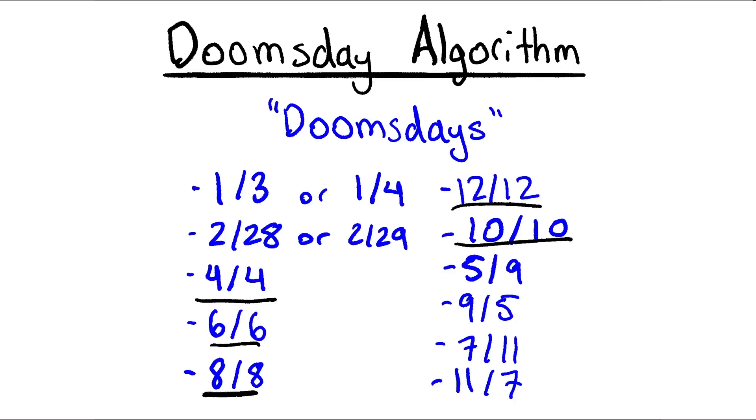And then another mnemonic to remember the other odd dates are I work 9 to 5 at the 7-11. So that gives you 5/9, 9/5, 7/11, and 11/7. And then you just have the last day of February and the 3rd or 4th day of January. But the main point here is that these 11 days all fall on the same weekday during any year.